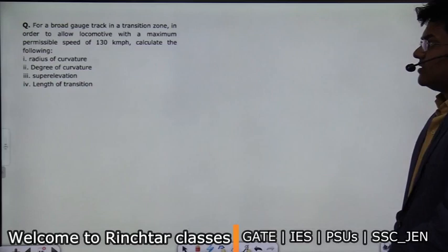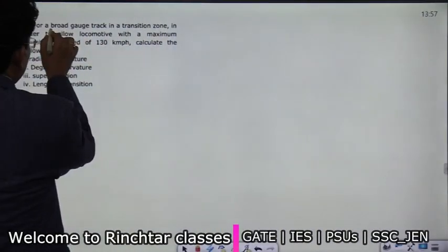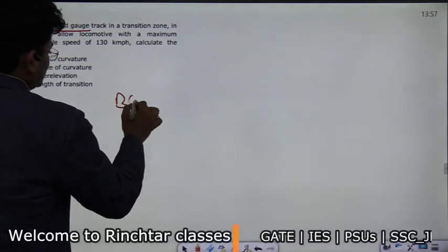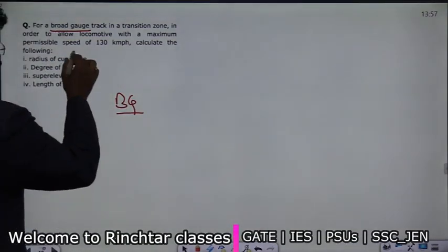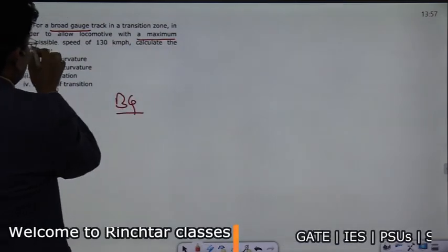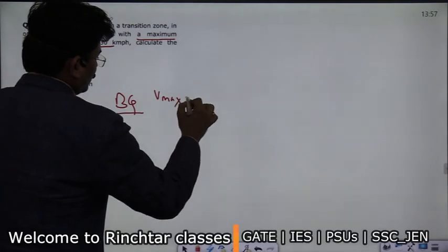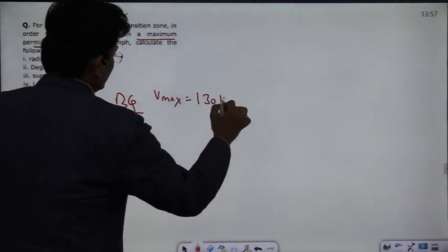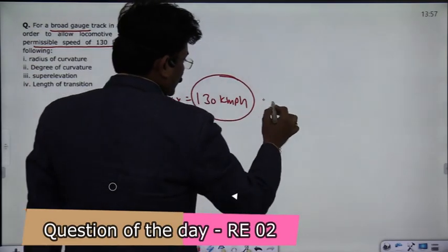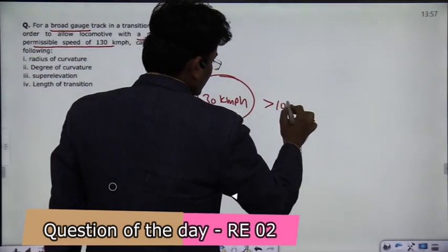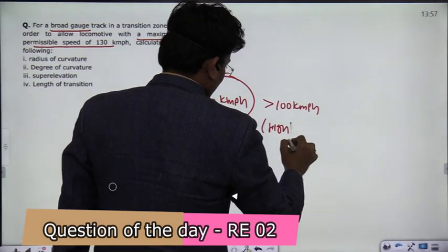For a broad gauge track in a transition zone, the track given is a busy track. In the transition zone, in order to allow the locomotive with the maximum permissible speed of 130 km per hour — so Vmax is equal to 130 km per hour. Clearly this is more than 100 km per hour, which means the track you are building here is a high speed track.